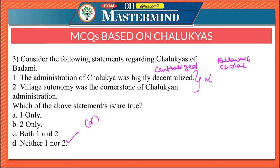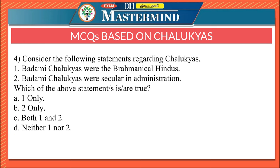The Chalukyas had great maritime power — Pulakeshi 2 had a hundred ships in his navy. The Chalukyas of Badami also had a small standing army. Please remember these points.